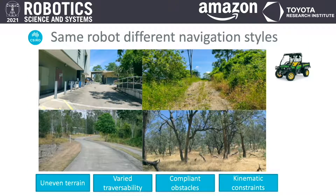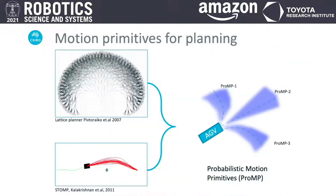The motivation of our work comes from the fact that in spite of significantly different navigational challenges faced by a field robot, the planning strategy often remains the same. We present a framework where the motion primitives can themselves be adapted at runtime to perform locally suitable optimal planning.